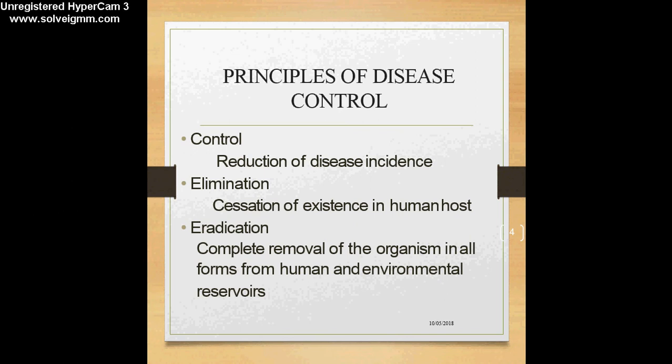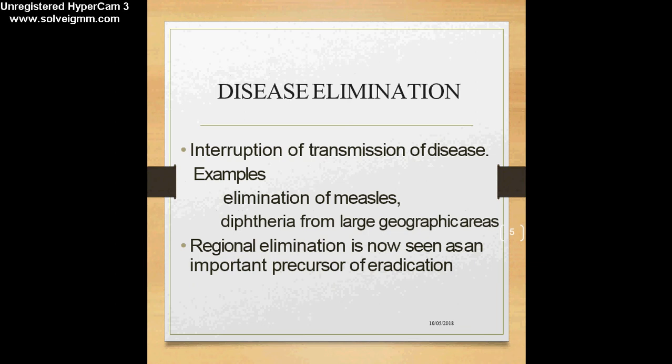When we talk about disease elimination, we are talking about interrupting the transmission of disease. This is very important because in elimination, disease transmission is occurring but we are planning to interrupt it and stop it. An example of disease elimination is measles — a viral infection spread by the respiratory route affecting young children. By vaccinating the maximum number of young children, we have been able to remove the existence of the measles virus from these children.